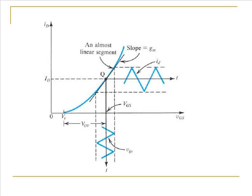On the ID versus VGS characteristic, we have chosen a bias point Q. The voltage corresponding to Q is the DC voltage VGS. Around that DC voltage, we apply a small AC signal vgs. This signal is amplified and we get the signal current. Transconductance is defined as the slope of the ID-VGS curve at the particular DC bias point.